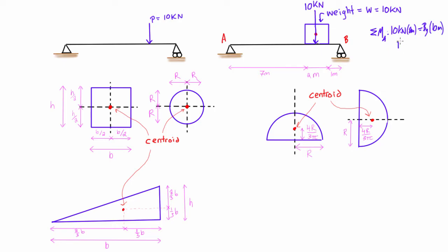So if we just solve for that, then BY here is equal to eight kilonewtons, and with the sum of forces in the y direction, we're going to find that AY is going to be just that other two kilonewtons.